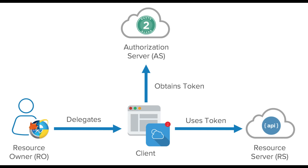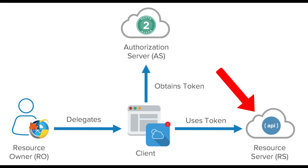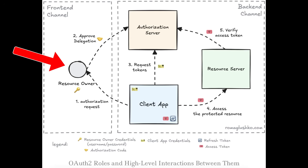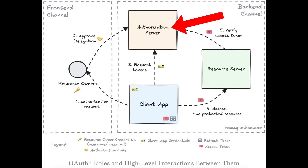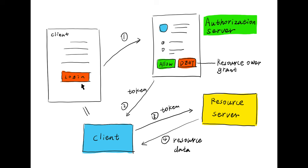At the center of OAuth are four roles: the resource owner, the client, the authorization server, and the resource server. The resource owner is typically the user whose data is being accessed. The client is the application requesting access on behalf of the user, like Spotify wanting to read your playlists from your Google account. The authorization server is the system responsible for authenticating the user and issuing tokens, like Google's OAuth server. And the resource server hosts the protected resources and validates access tokens before serving data. This division of responsibility is crucial because it allows apps to interact with APIs securely without ever handling the user's credentials directly.